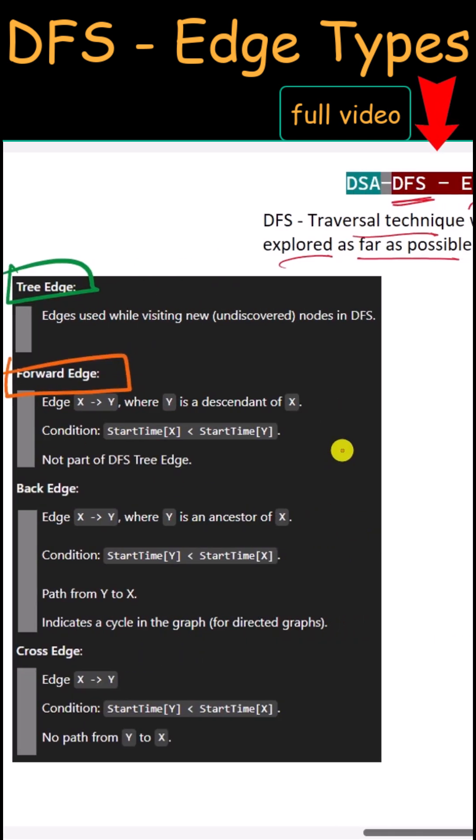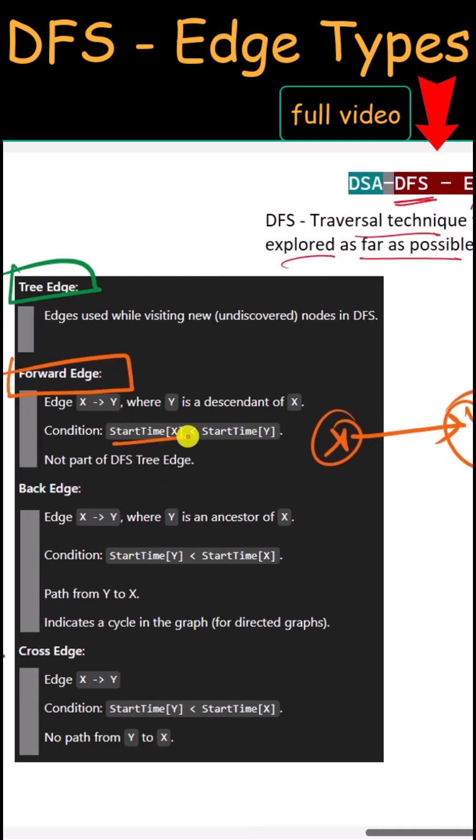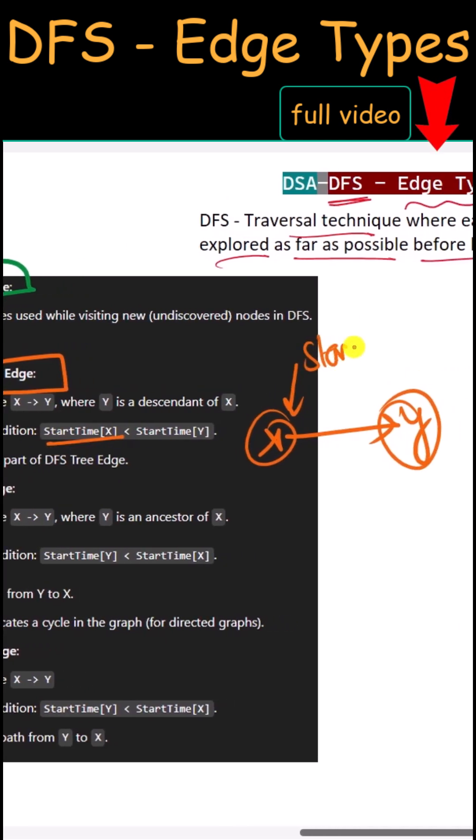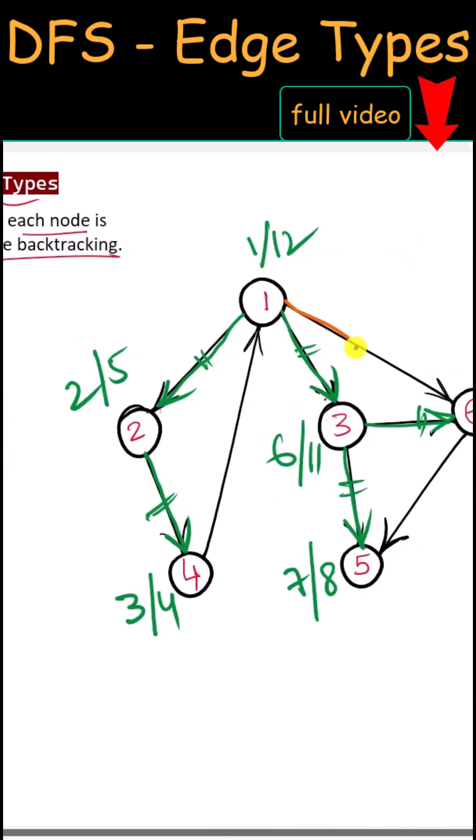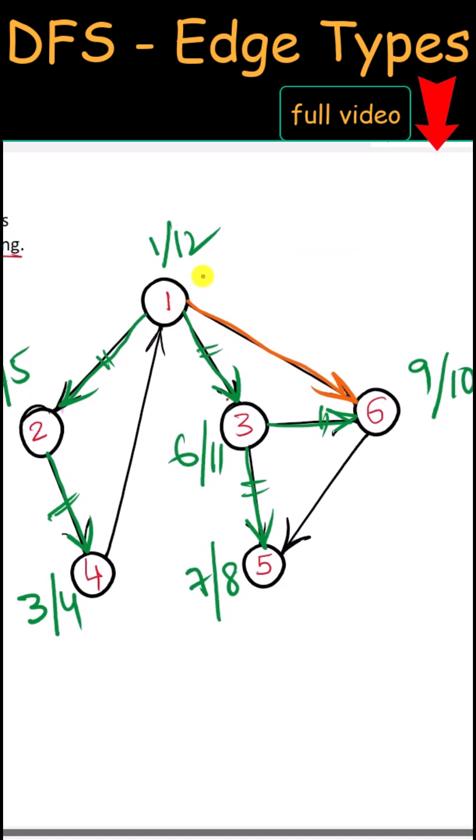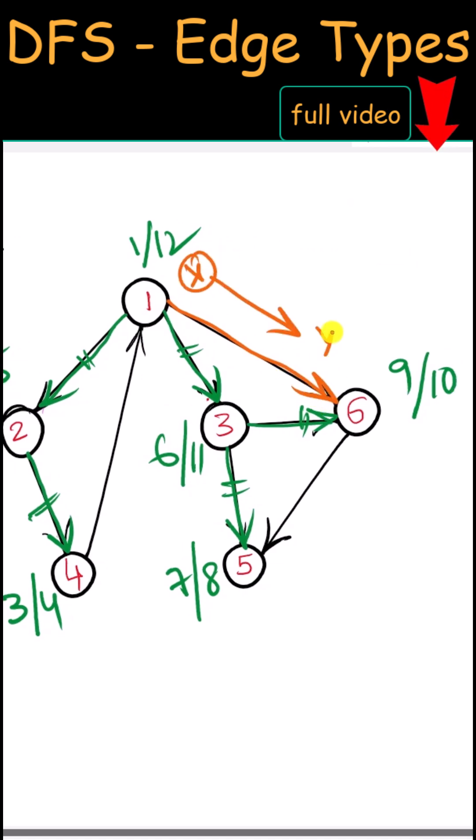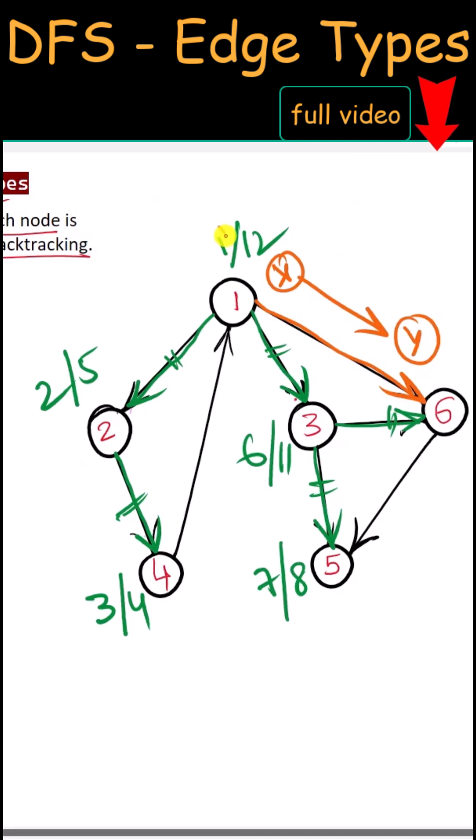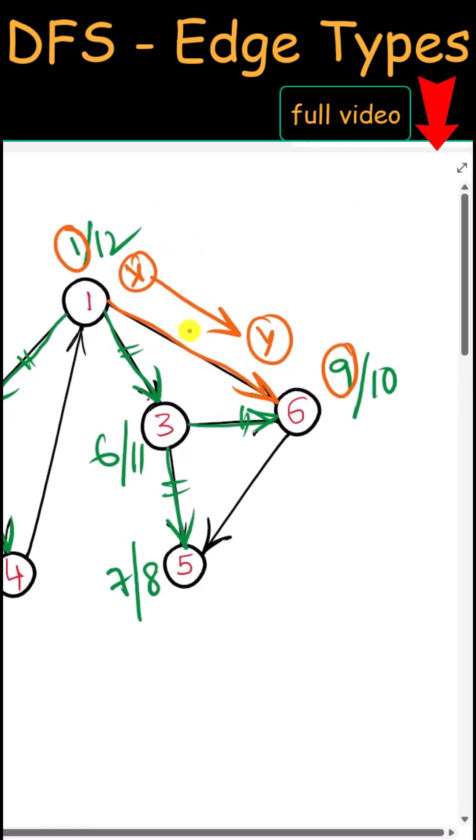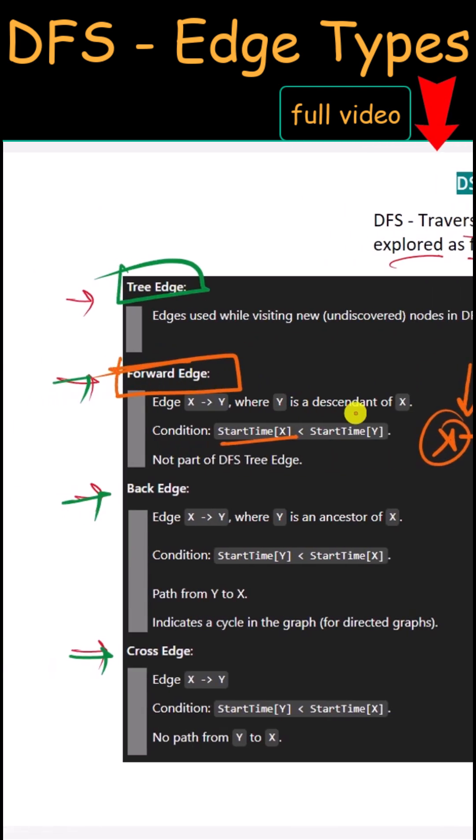First, let's talk about the forward edge. In case of forward edge, X must start before Y. Here we have the edge from 1 to 6, so 1 is X and 6 is Y. Because 1 starts before 6, that is one example of a forward edge.